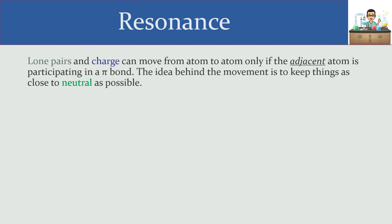So how do you spot when resonance is a possibility besides taking a look at the hybridization of orbitals? What you want to do is look for lone pairs and or charge. Charge could be plus or minus. When you have lone pairs or charge, those can move around from atom to atom only if the adjacent atom is participating in a pi bond.